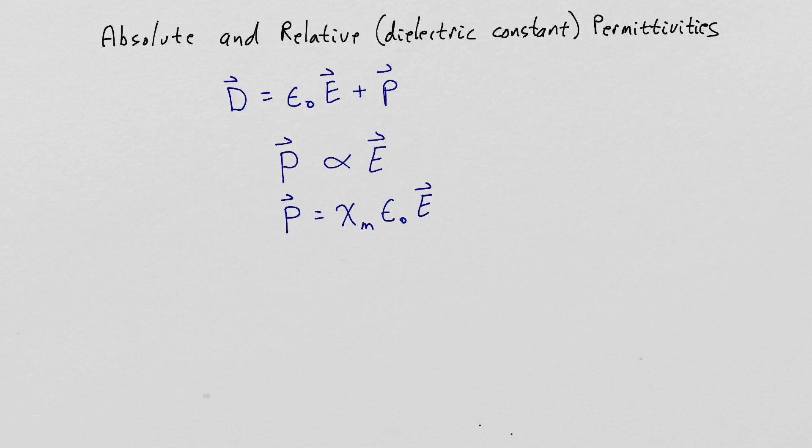We are going to write the proportionality constant between the polarization and the electric field intensity as chi sub m times epsilon sub zero, the permittivity of free space. Chi sub m is the electric susceptibility.